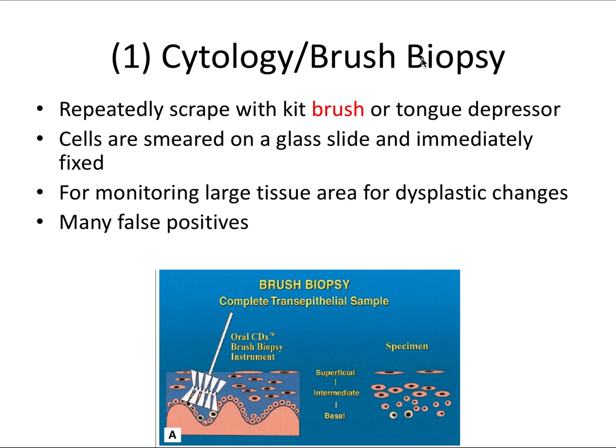The first is cytology or brush biopsy. This is where you repeatedly scrape the lesion with a kit brush or even a tongue depressor. Here is an example of a kit brush being rubbed against the surface of a lesion. The cells are then smeared on a glass slide and immediately fixed. This is great for monitoring large tissue areas for dysplastic changes, particularly if you're able to slough off some of that tissue rather easily.